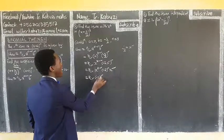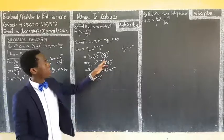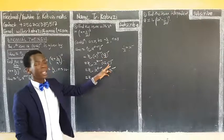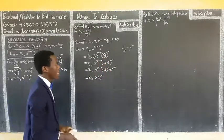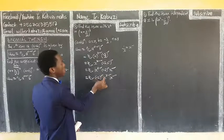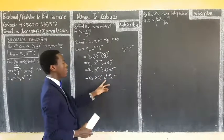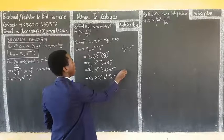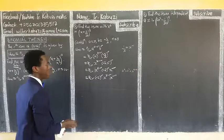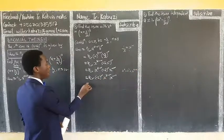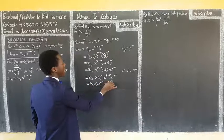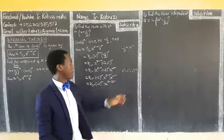We have (-2)^r and the overall power of x is (8 - 2r). To find the term with x^6, we set the overall power of x equal to 6: 8 - 2r = 6. So -2r = 6 - 8 = -2, giving r = 1.